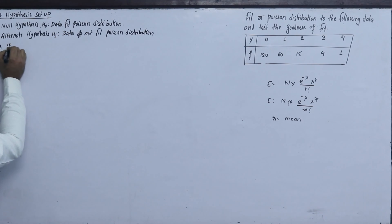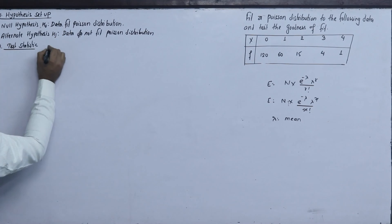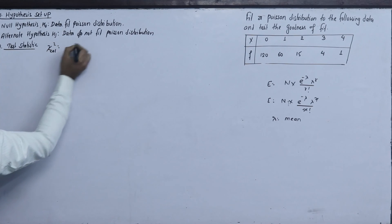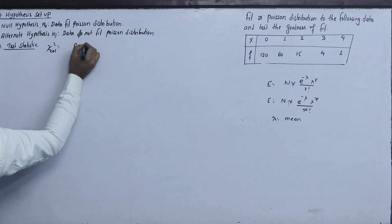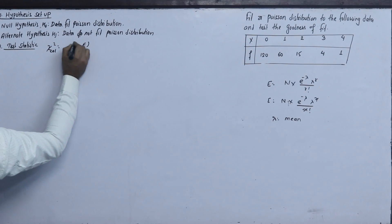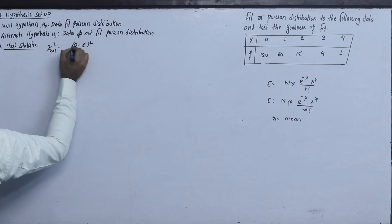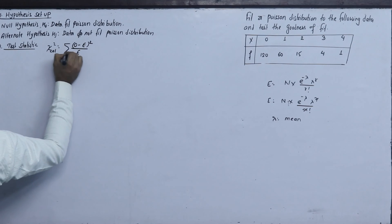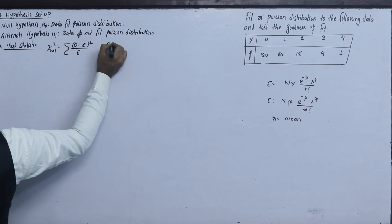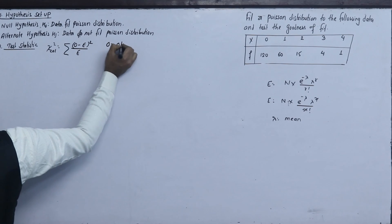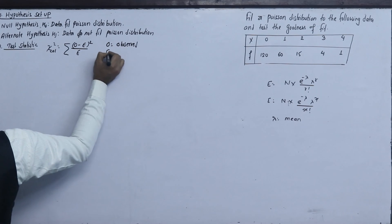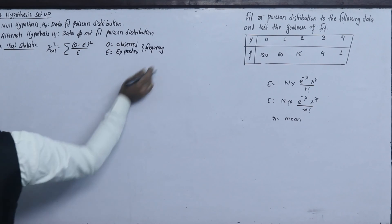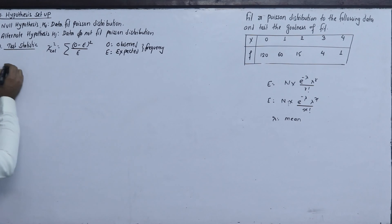Now for the test statistic, we have to calculate chi-square: summation of (observed frequency minus expected frequency) squared, divided by expected frequency. Here O is the observed frequency and E is the expected frequency.